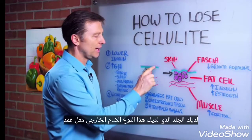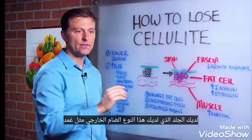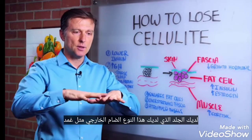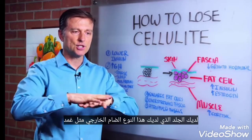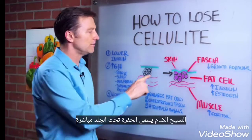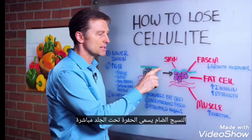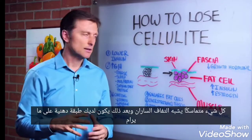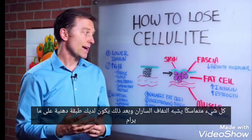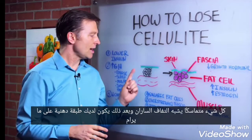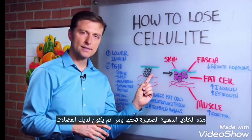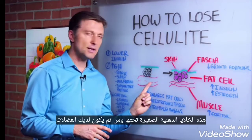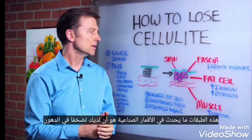Normally you have the skin, then you have this outer connective tissue — kind of like a sheath — called fascia, right underneath the skin that keeps everything held together. It's like saran wrap. And then you have a fat layer, these little fat cells underneath, and then you have the muscle. So you have these layers.